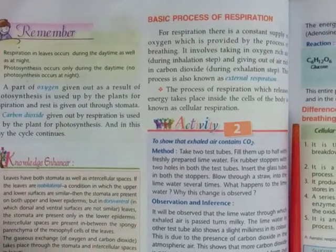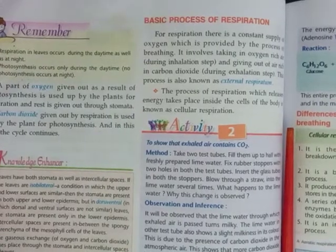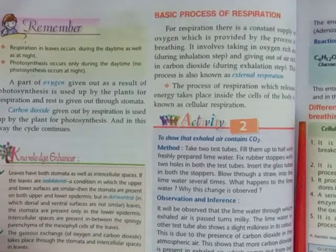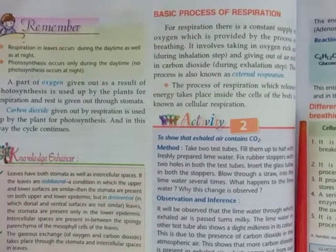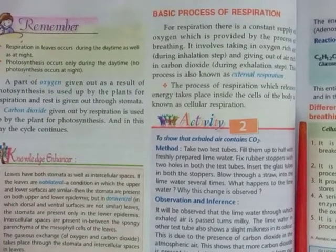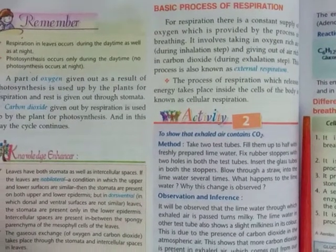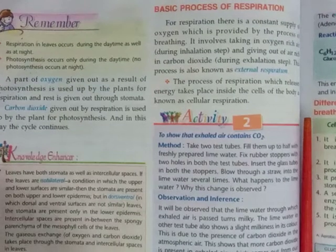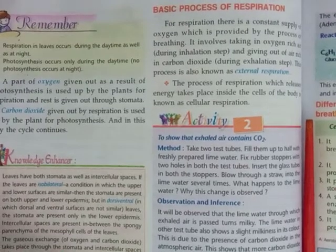Hello children, today we will continue chapter 4, respiration. In the previous class, I taught you about respiration in plants. You all know that oxygen is obtained from the atmosphere through various parts of the plants — through stomata in leaves, through lenticels in stems, and through the general surface of the roots. So, respiration takes place through various parts of the plants: leaves, stems, and roots.